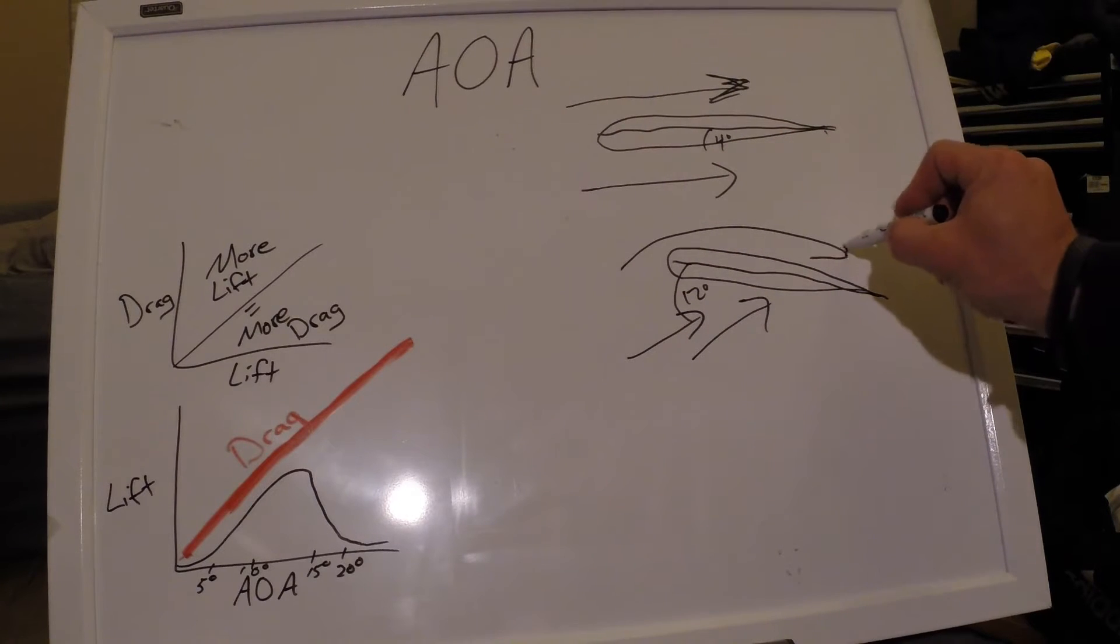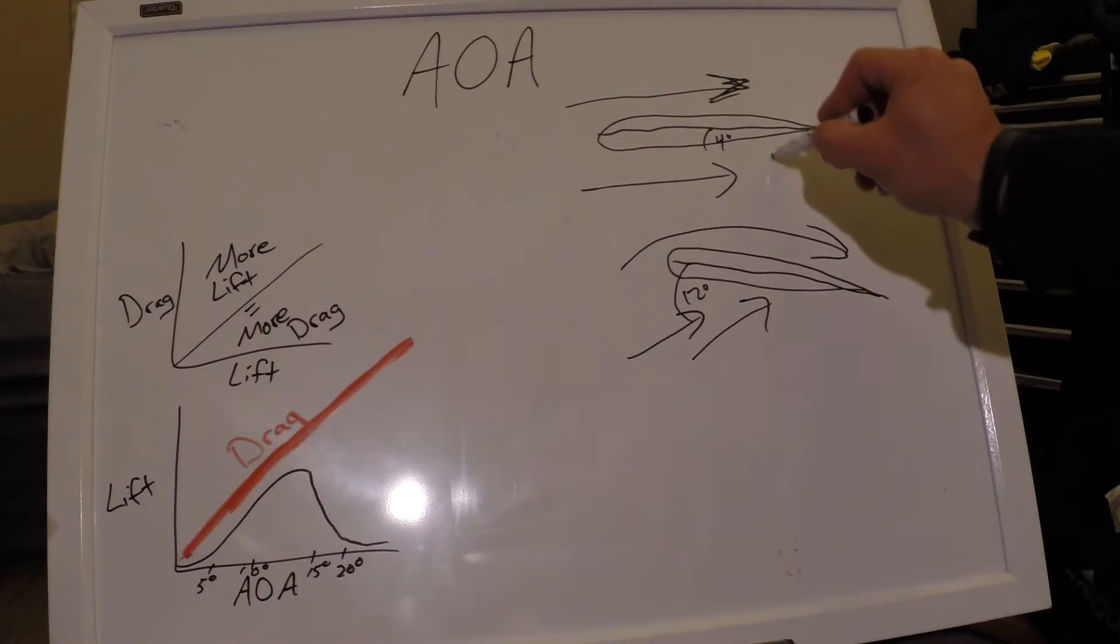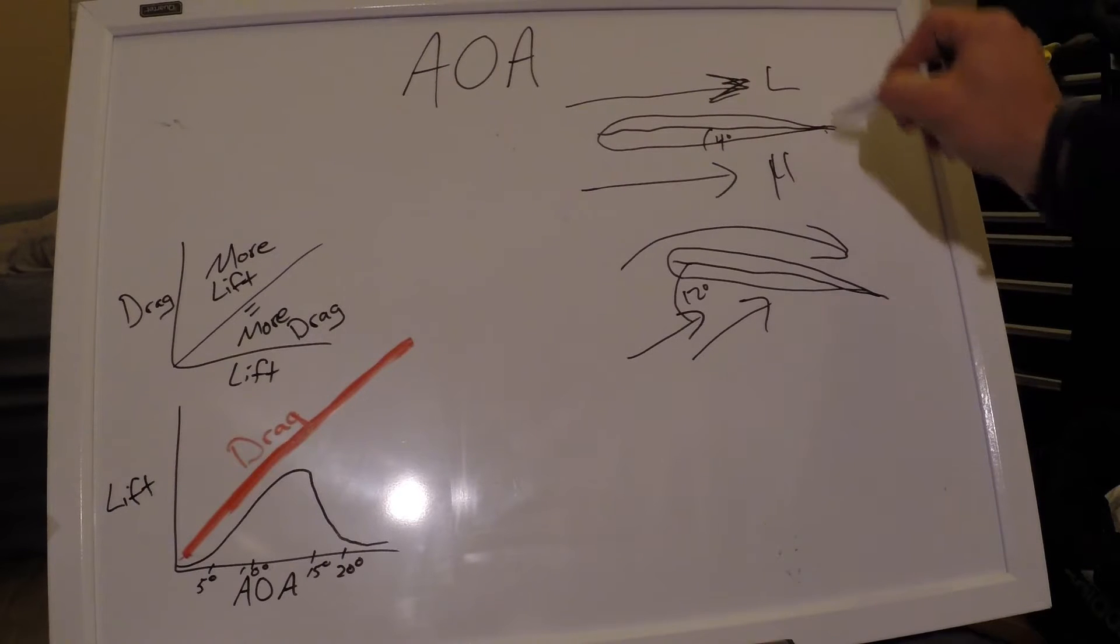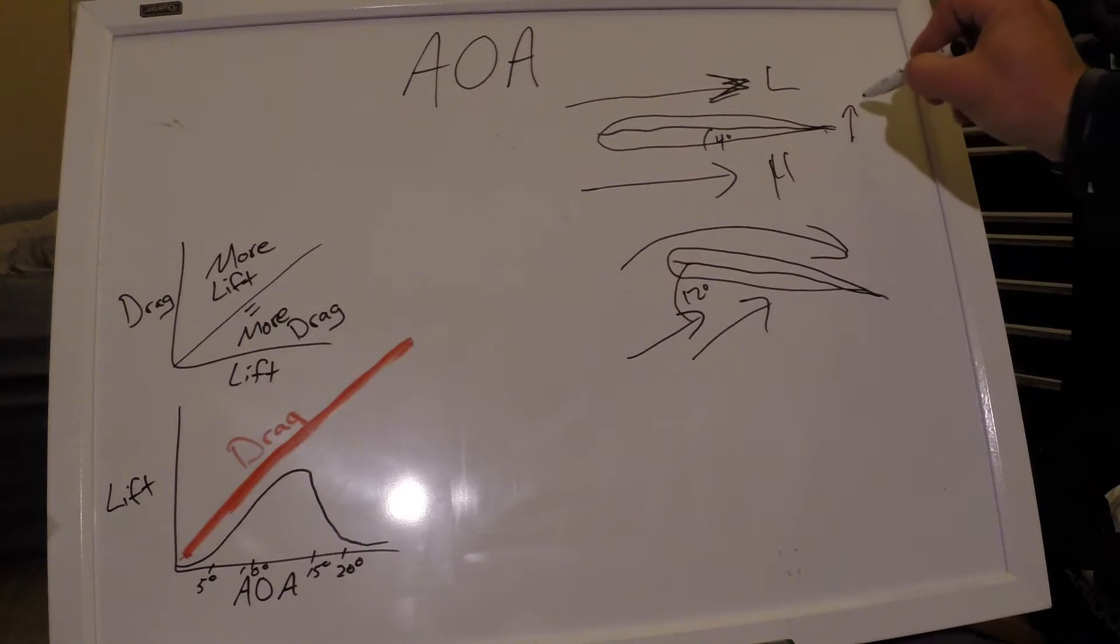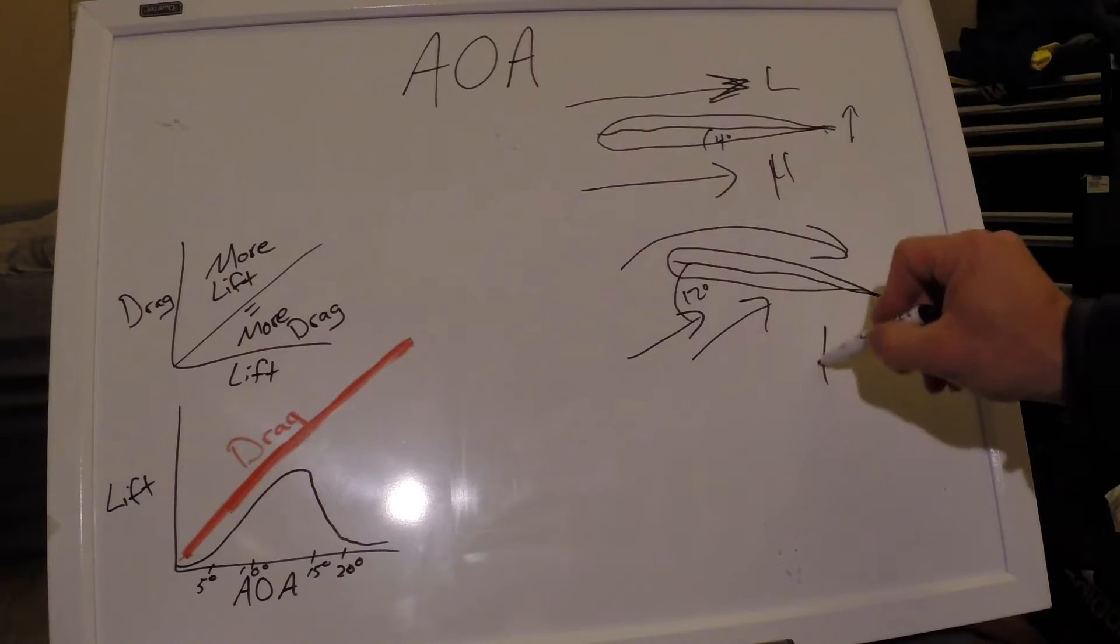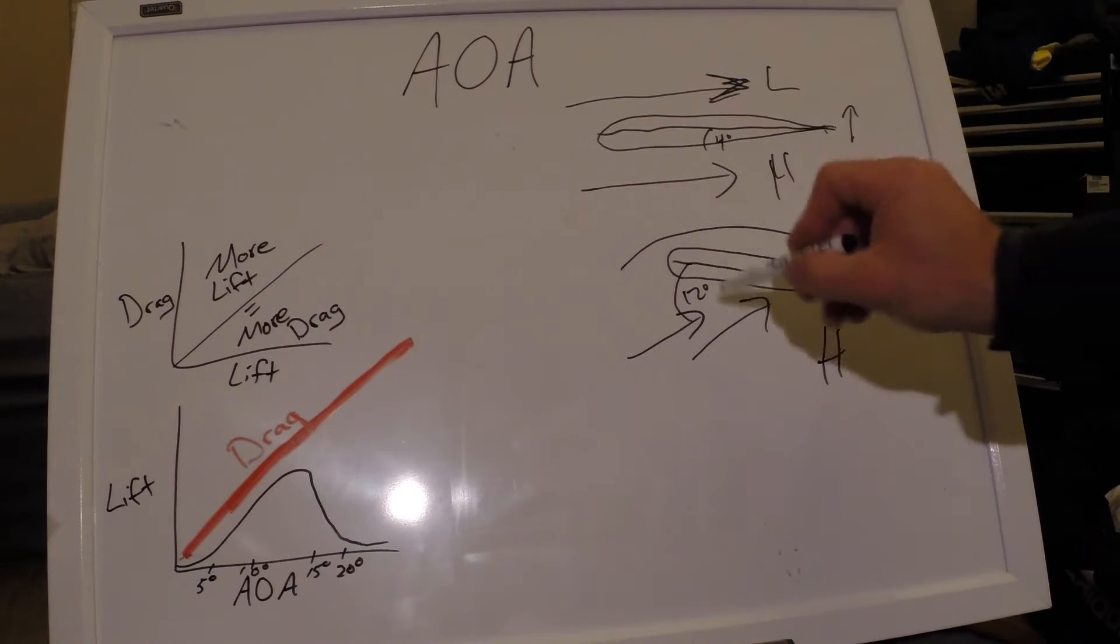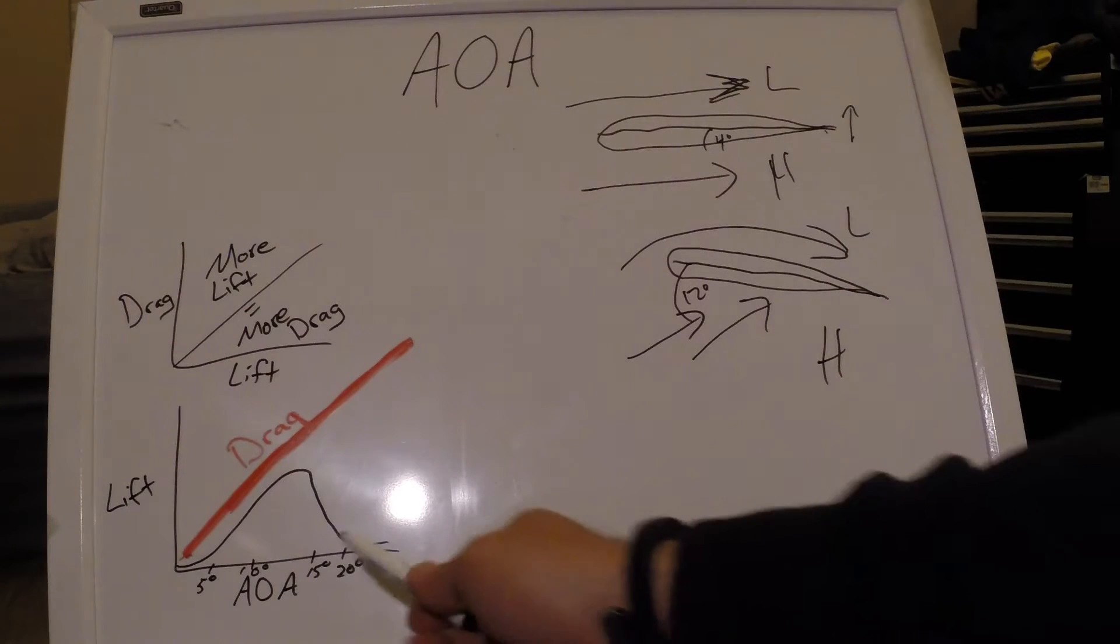We're going to have our normal high pressure and low pressure that creates lift just a little bit there at four degrees angle of attack. Here we have our high pressure and low pressure, it's a bit greater since we have a greater angle of attack.